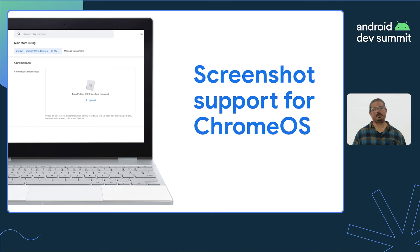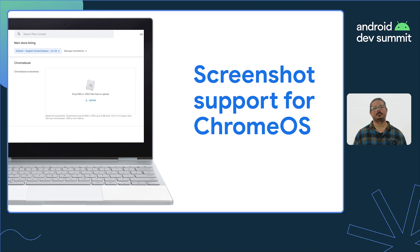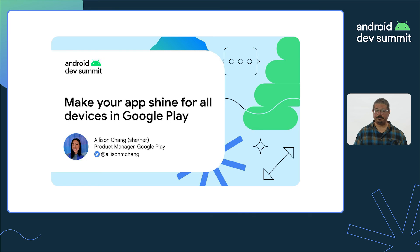Once we're sure that our app is available on Chrome OS devices, we'll want to show potential users what our app looks like on Chrome OS. I mentioned at the beginning that I'd cover a new capability, and I'm happy to share that the Play Console now allows you to upload screenshots specifically for different form factors, like Chrome OS. To learn more about this new functionality and best practices for publishing for various form factors, be sure to check out Make Your App Shine for All Devices in Google Play.